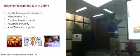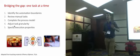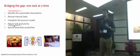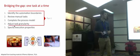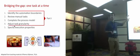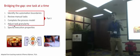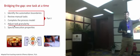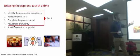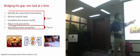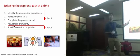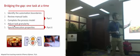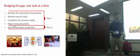The first four steps will lead to the to-be-executed process model — this intermediate artifact. This will be covered in part one. After the break, Marlon will take over and focus on the last mile: the specification of the execution properties.